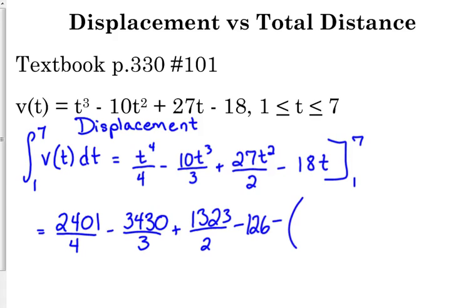Minus, put a big set of parentheses. This was another issue on the quiz, was sign errors. Plugging in 1 gives us 1 4th. This one's easy. Minus 10 3rds plus 27 over 2 minus 18.